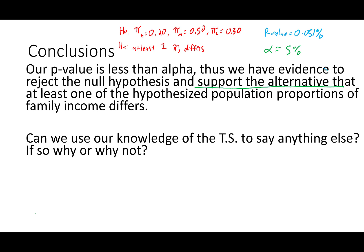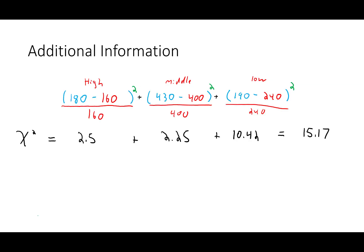And if so, why? Well, let's go back to our test statistic and think about this. Essentially what we did was find individual test statistics. Our p-value is less than alpha, so we had evidence at least one population proportion differs. What we can see is that the larger the test statistic, the more evidence we had for the alternative hypothesis. And one of our test statistics is really big. Thus, we can go inside our overall test statistic — think of this as your overall test statistic — and break it down by each group, that 15.17.